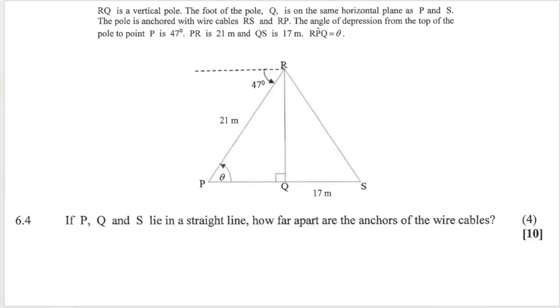Our last question here. If P, Q and S lie in a straight line, which we said in the beginning they do, how far apart are the anchors of the wire cables? If you read the story carefully they say the pole is anchored with wire cables RS - there's my one wire cable there, it's anchored there - and RP, it's anchored there. So what this question wants to know is how far apart are the anchors? There's my one anchor at P. There's my other anchor at S. They want to know how far apart are these two.